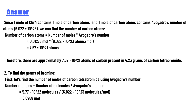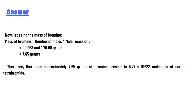For part two, to find the grams of bromide, first let's find the number of moles of carbon tetrabromide using Avogadro's number: number of moles equals number of molecules divided by Avogadro's number, so 5.77×10²³ molecules divided by 6.022×10²³ molecules/mol, which is approximately 0.0958 mol. Now the mass of bromide equals number of moles multiplied by the molar mass of bromide: 0.0958 mol multiplied by 79.90 g/mol, giving approximately 7.65 grams.